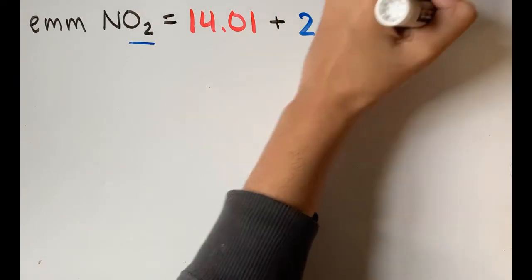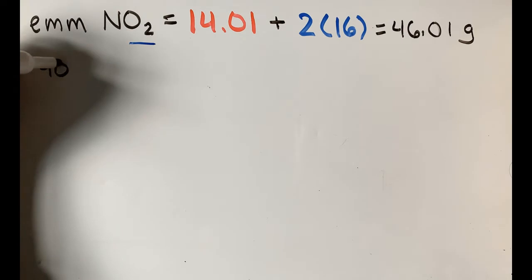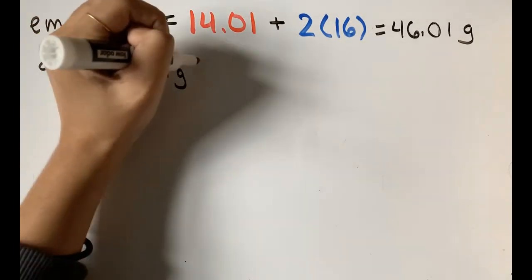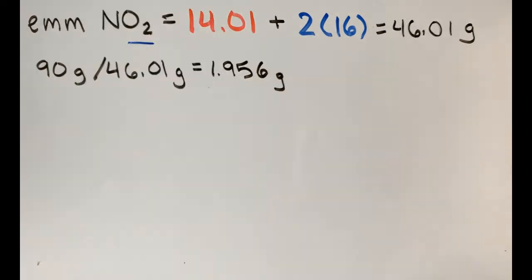This is 46.01 grams. 90 grams, the smallest possible mass of the compound divided by 46.01 grams, gives us about 1.956, which is a little less than 2.